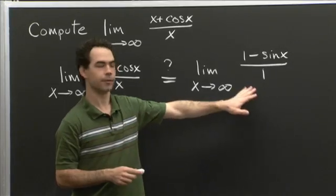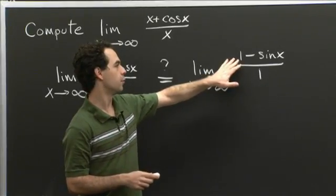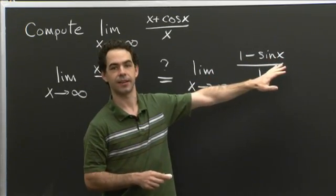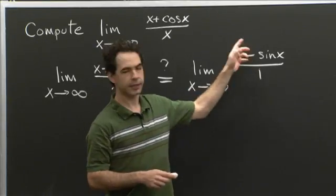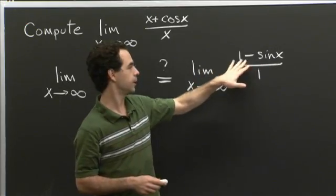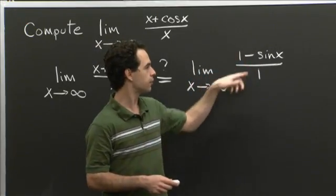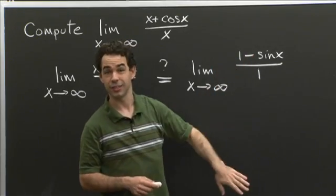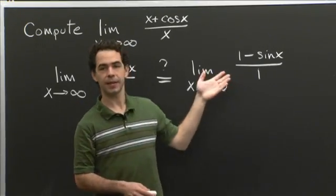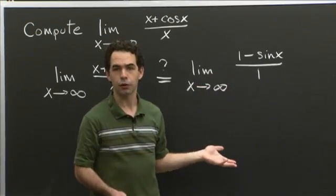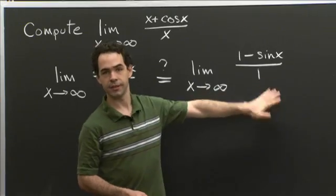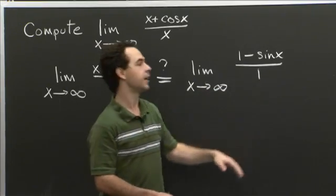Now let's look at this limit. The over 1 part is irrelevant. The only thing that's changing in this limit is the sine x. As x goes to infinity, this oscillates just like sine x does — it's offset and flipped upside down because of the 1 minus. So sometimes it's near 1, sometimes near negative 1, sometimes near 0, and it oscillates back and forth. Because it's oscillating, it's not approaching any value. This limit doesn't exist — it's not equal to any real number, not infinity, not minus infinity. It does not exist.